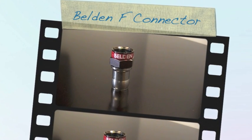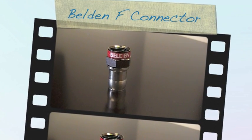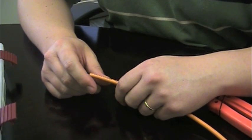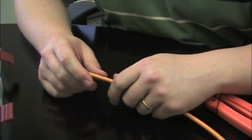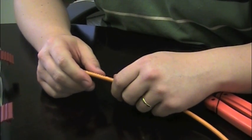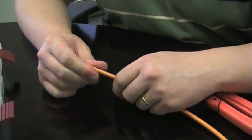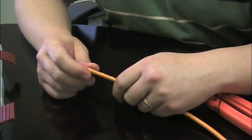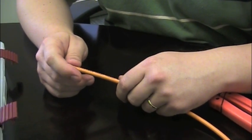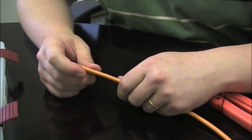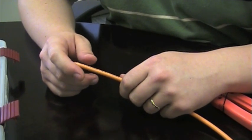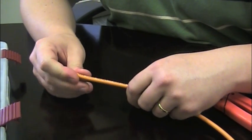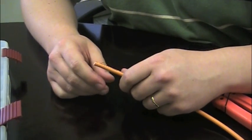Hello, now we're going to show you how to terminate RG59 cable with an F-series connector. Hello and welcome to our demonstration for Belden's compression connector series. Today we're going to be talking about terminating three different kinds of cable: RG59 coax, RG6 coax, and our mini RGB coax. We're going to start off with terminating our RG59 coax with an F-connector.